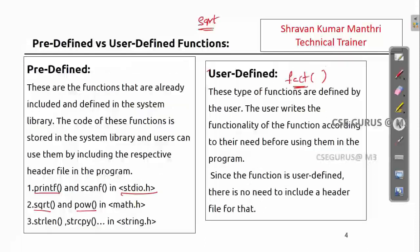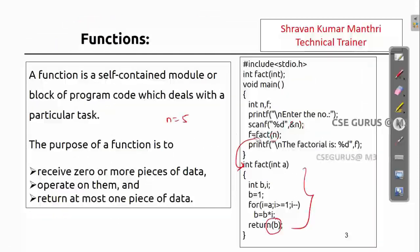Now, what about main? Main is a function — is it user-defined or predefined? The name 'main' is predefined, meaning it must be used to start program execution. But everything you write inside the main function is written by you as a user, so main is classified as a user-defined function.